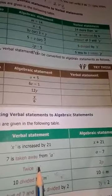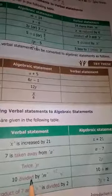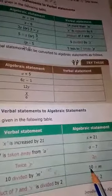Twice p means 2p. 10 divided by m - use the division symbol to write this algebraic statement. Next is 'the product of 7 and y, divided by 2'.